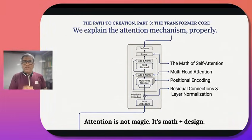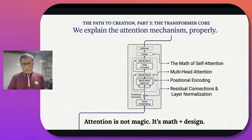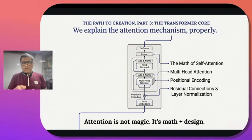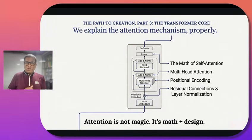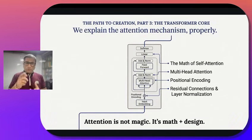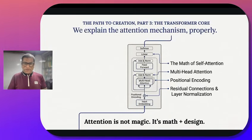Once we understand that, we will move on to the next part — the core philosophy of any LLM today. This is the T in GPT. T stands for transformer, and the transformer is the backbone of almost all LLMs today. This is where we will understand what a transformer is, its architecture, what is encoder, decoder, self-attention mechanism, multi-head mechanism, positional encoding, and more. There are many things we will have to build everything from scratch. Attention is not imagined, LLM is not imagined — it is just pure math plus design.